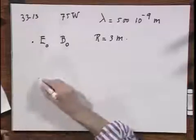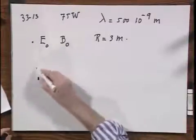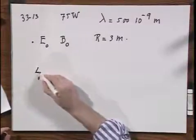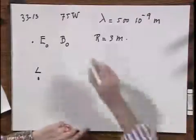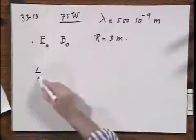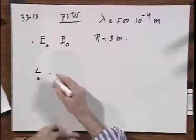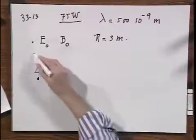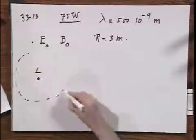And when I do that, I have here this source, which has a certain energy per second, 75 watts. I call that the luminosity, because I'm an astronomer, and astronomers call that luminosity.